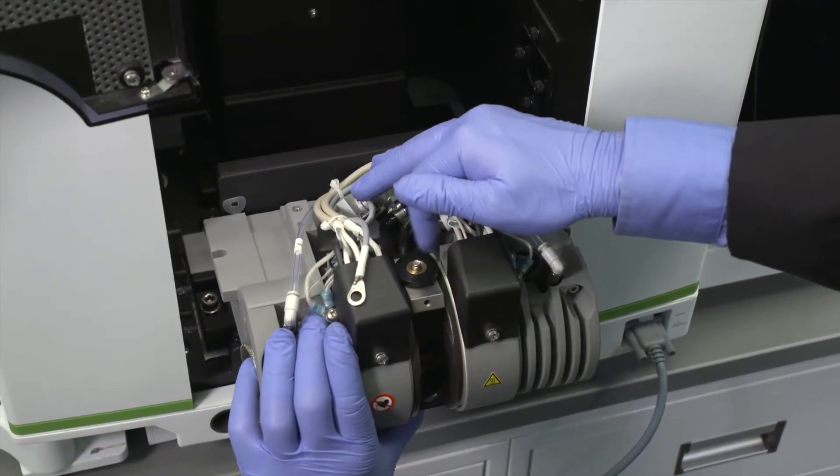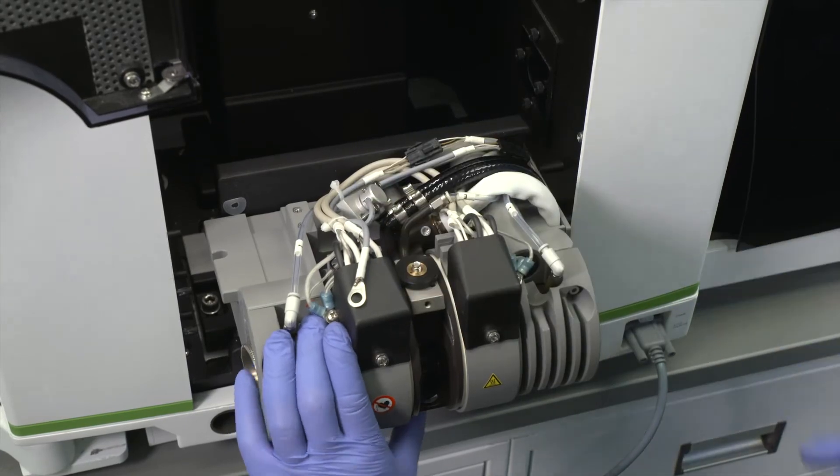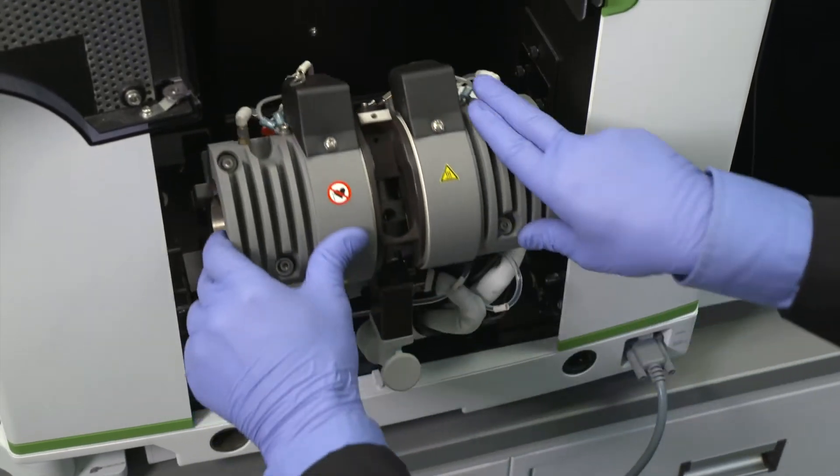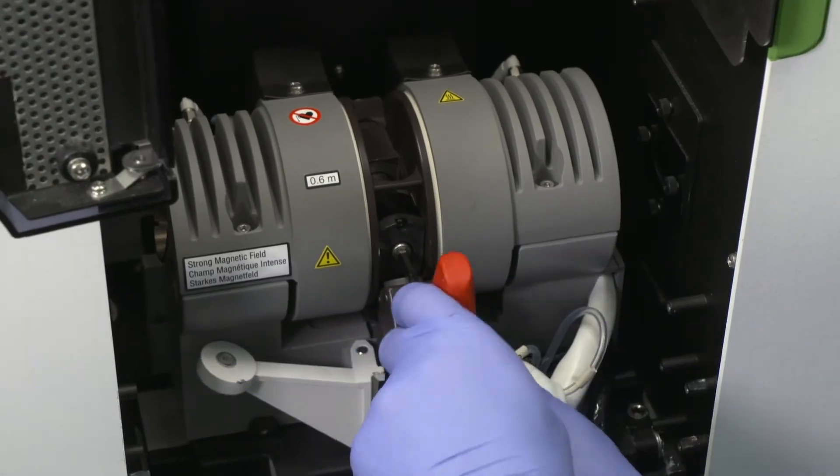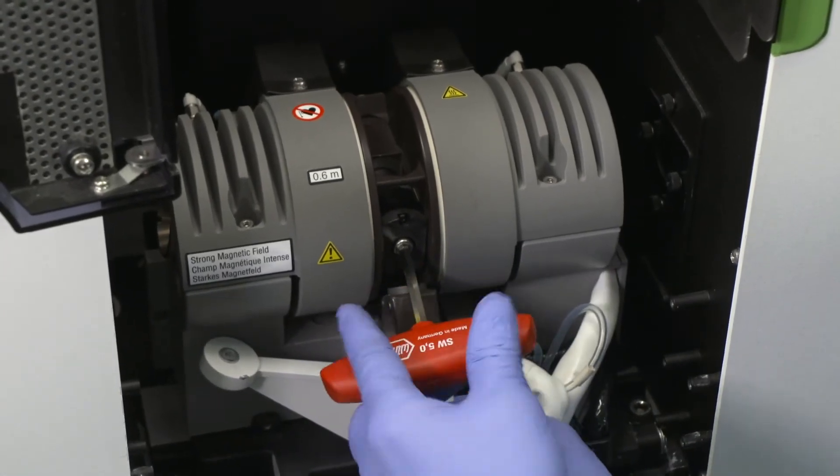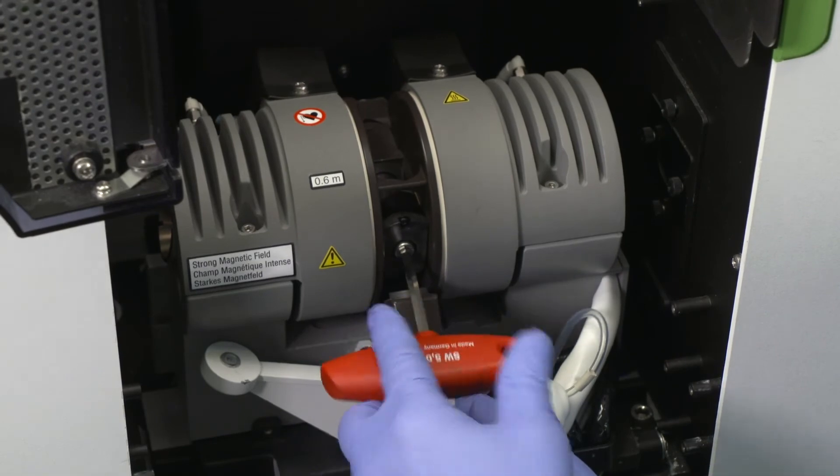Again, ensure the dosing hole is at the top. Tilt the graphite furnace back into its original position. Then use the hex driver to screw the bolt into the threaded cylinder. Push the contact into the contact housing.